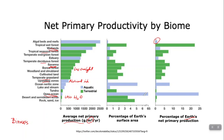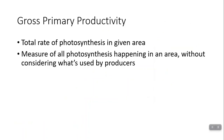Productivity is important because producers are the basis of all food webs and food chains in an ecosystem. Without them, you can't have other organisms in the area. The amount of energy they bring in determines how many consumers and decomposers can live in an area.